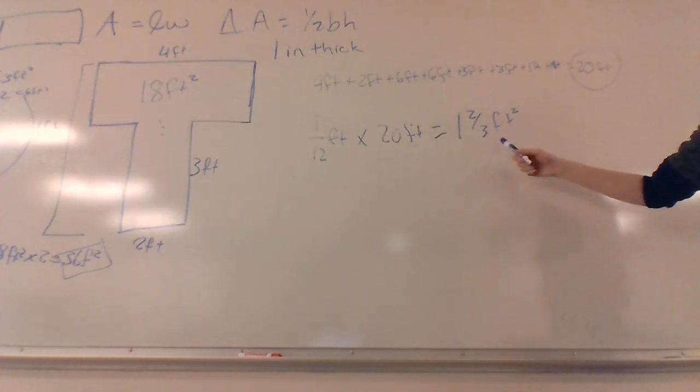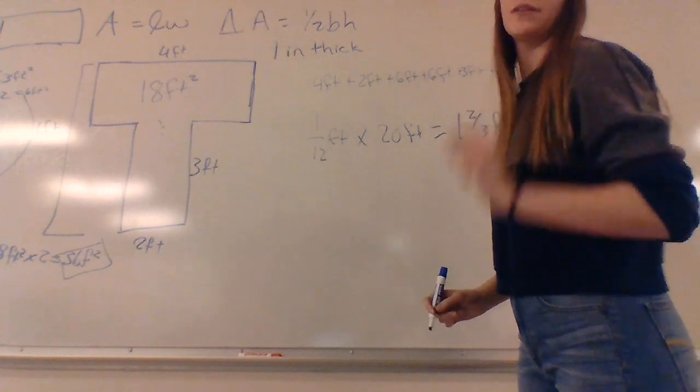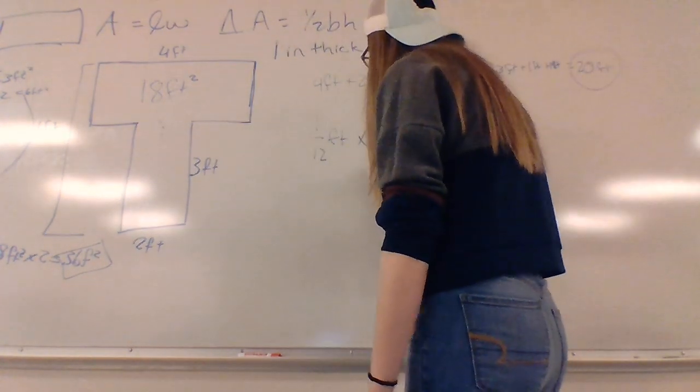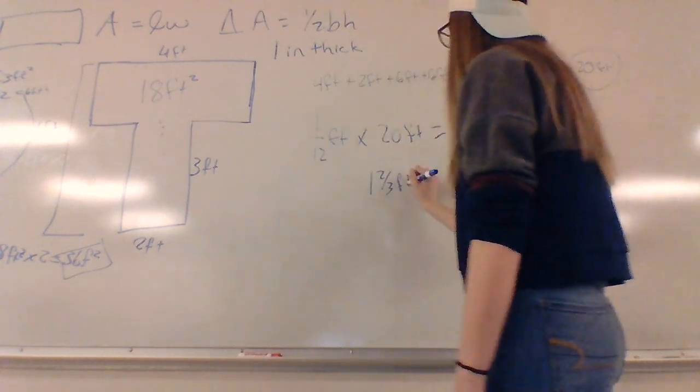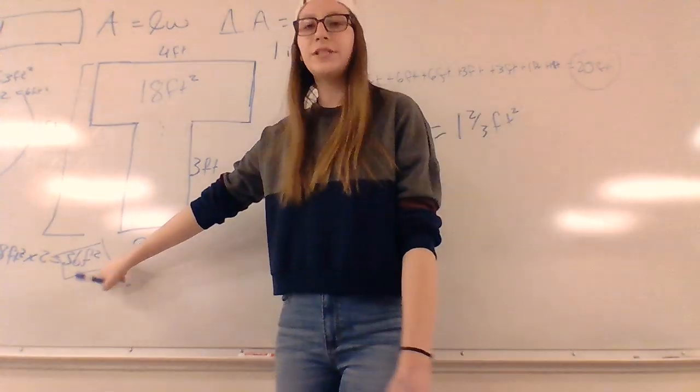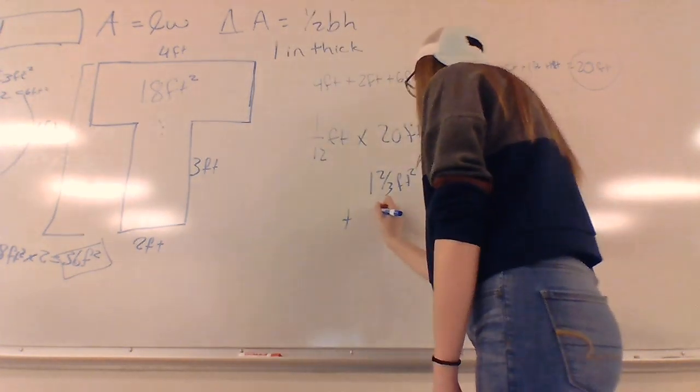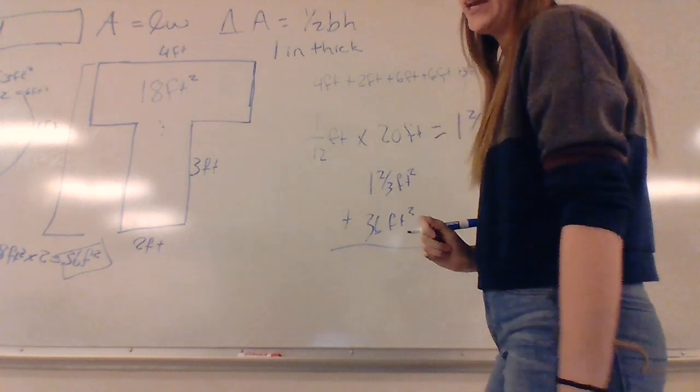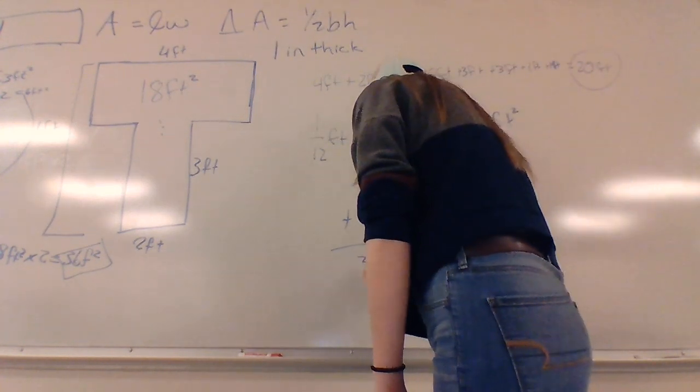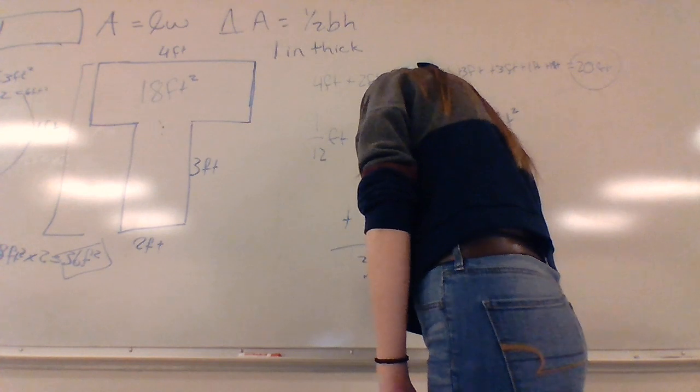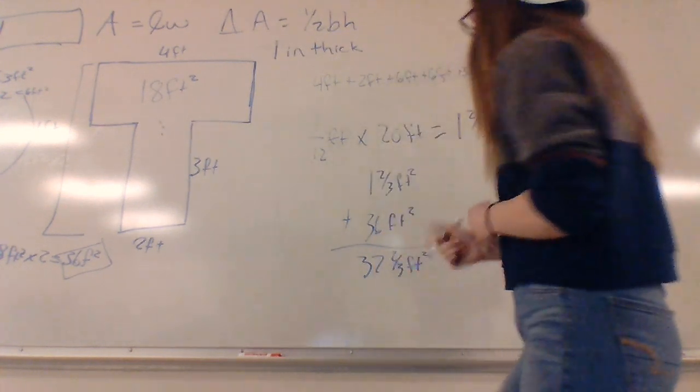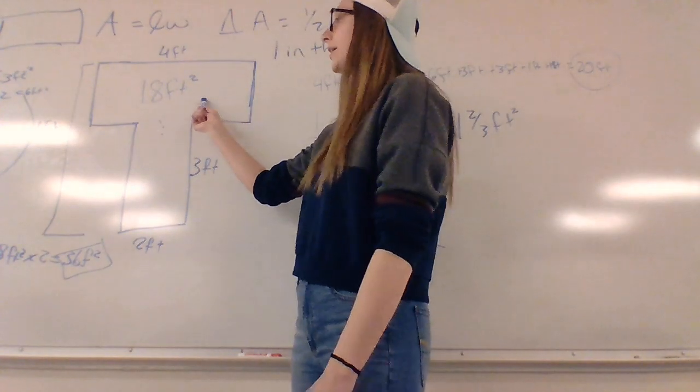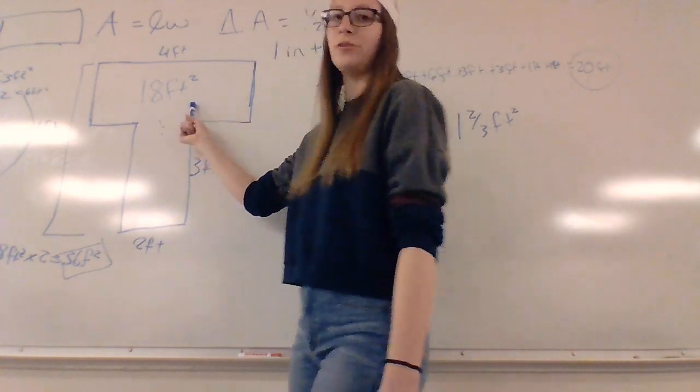And we are going to get 1 and 2 thirds feet squared. This is the area of the little piece that runs around the whole outside of the kite. Now we need to add 1 and 2 thirds feet squared plus the total of both of our T's, which is 36 feet squared. And you will get a grand total of 37 and 2 thirds feet squared. That will be your surface area of the Native American tribute kite.